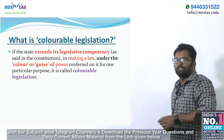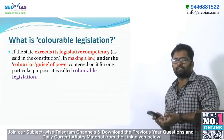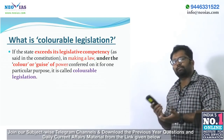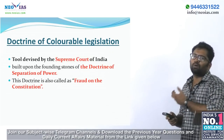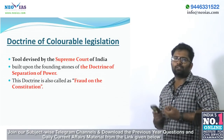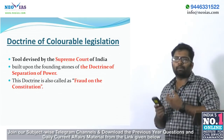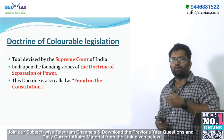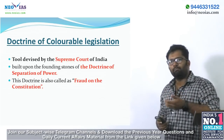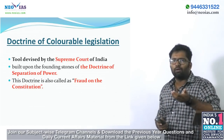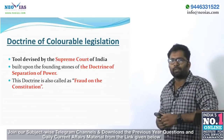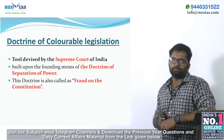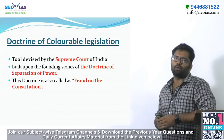What is colourable legislation? If the state exceeds its legislative competency in making a law under the colour or guise of power conferred on it for one particular purpose, it is called colourable legislation. This doctrine comes into play when a legislature does not possess the power to make law on a particular subject but nonetheless indirectly makes one. It is considered an attempt to subvert the constitution and is also called fraud on the constitution.